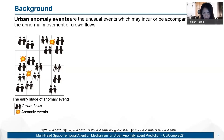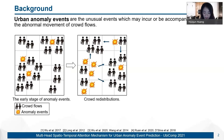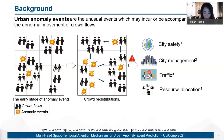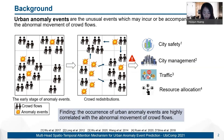However, people will move to the surrounding safe areas during the process of anomaly events. Such sudden change of crowd flow distribution along with the occurrences of anomaly events will further affect city safety, city management, traffic, and city resource allocation. From the dynamics of anomaly events and crowd flows, we can find that the occurrence of urban anomaly events are highly correlated with the abnormal movement of crowd flows.